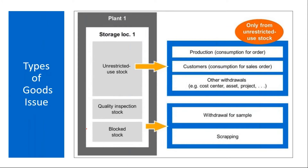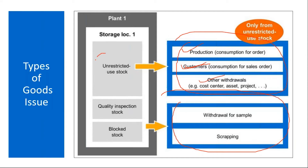You have two types: planned goods issue and unplanned goods issue. Planned goods issue means goods issue with reference — for example, goods issue for a production order, for a sales order to a customer, or some withdrawals. This can be done from the unrestricted use stock only — that means approved stock.